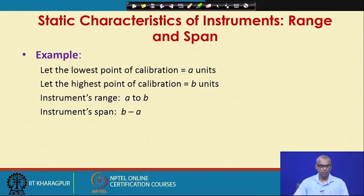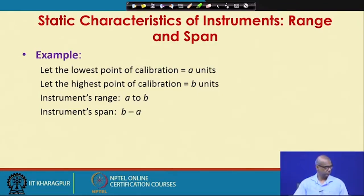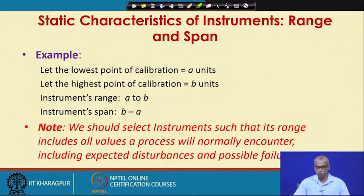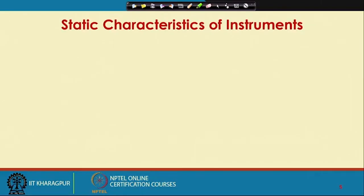Let us take a simple example. Let the lowest point of calibration be A units and the highest point be B units. Then the instrument's range is A to B, whereas the instrument's span is B minus A. We should select instruments such that their range includes all values a process will normally encounter, including expected disturbances and possible failures during measurement.